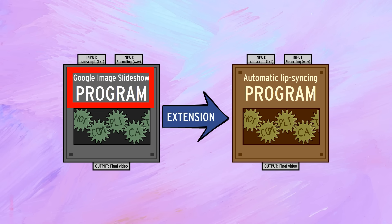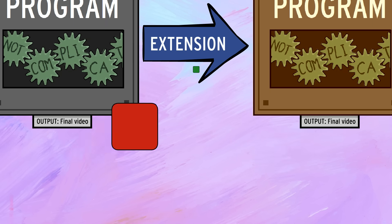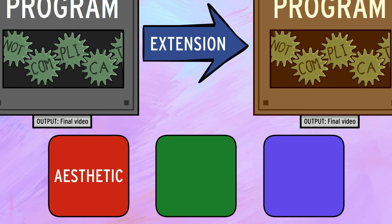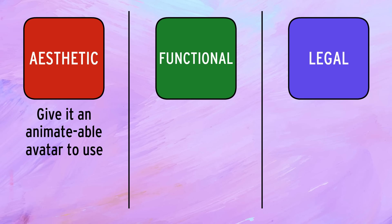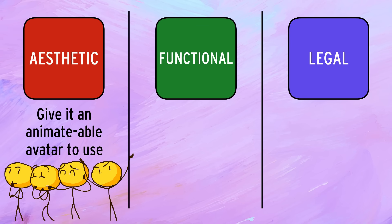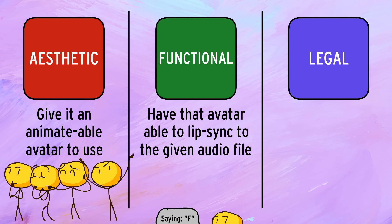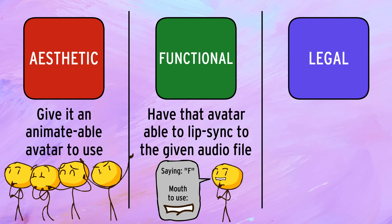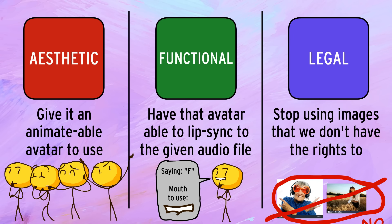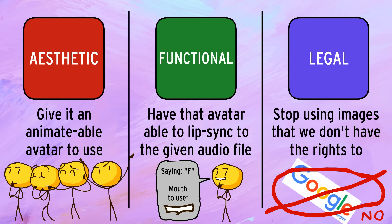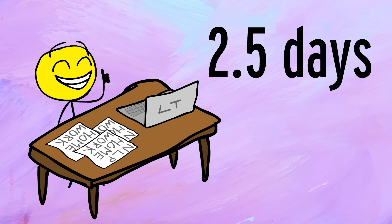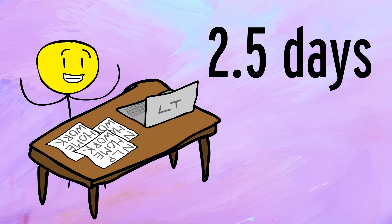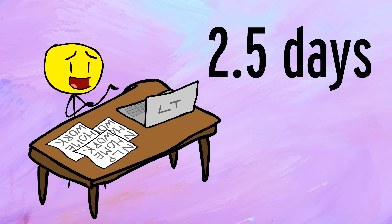So to improve on my Google image video generator, we have three areas to target: aesthetic, functional, and legal. Long story short, the things we need to do are give it an animatable avatar to use, have that avatar able to lip-sync to the given audio file, and stop using images that we don't have the rights to — meaning most Google images. After a couple days of coding, I got all three to work. So let's see it in action, and then I'll explain the details.